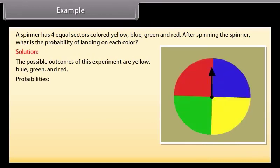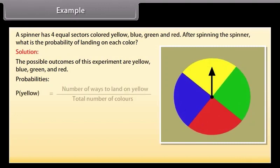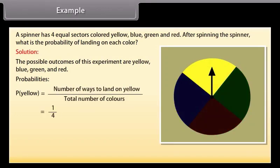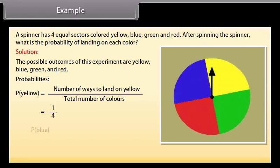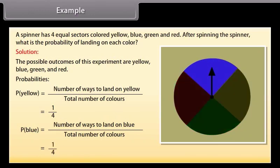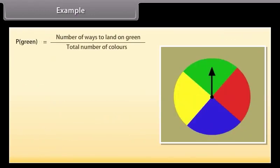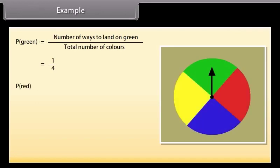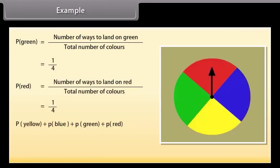Probability of landing yellow is number of ways to land on yellow by total number of colors, which equals 1 by 4. Probability of landing blue equals 1 by 4. Similarly, we will find the probability for green and red, and if we add all these probabilities, we will get 1.